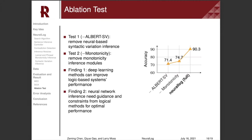In addition, we conducted two ablation tests on the SICK dataset. First, we removed the neural model for syntactic variation inference. As a result, the accuracy decreased by a significant amount, suggesting that performance improves when logical systems utilize neural models.